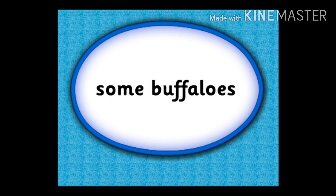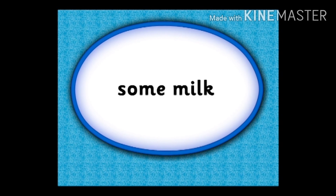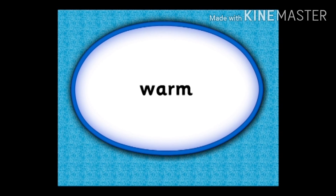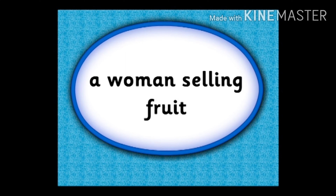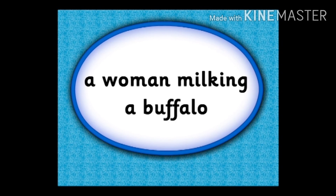Repeat after me the words you learnt today. A neighbour. Some cows. Some buffaloes. Some milk. Fresh. Warm. Home. A cock. A hen. A woman selling fruit. A woman milking a buffalo. A cowshed.